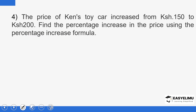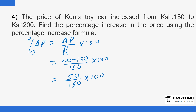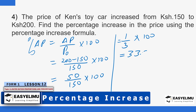The price of a commodity increased from 150 to 200. Find the percentage increase using the percentage increase formula. Percentage change in price equals change in price over original price times 100. The change is 200 minus 150 equals 50, over 150, times 100. That gives 50 over 150 times 100, which is 1 over 3 times 100, giving 33.33%.